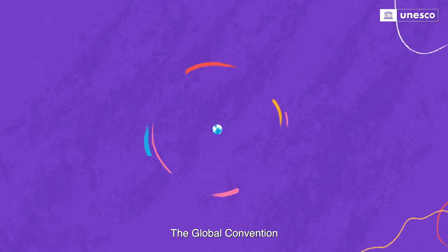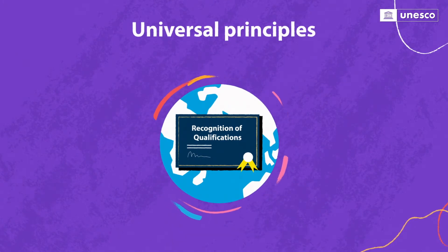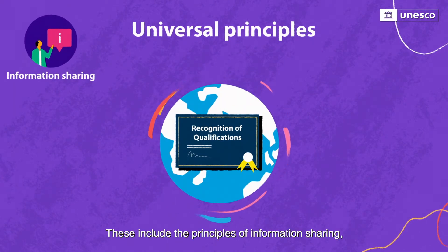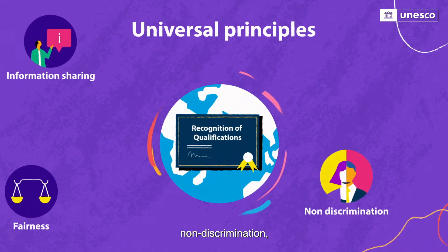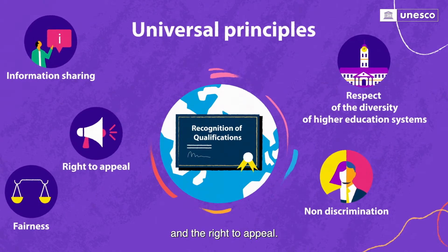The Global Convention establishes universal principles for the recognition of qualifications. These include the principles of information sharing, fairness, non-discrimination, respect for the diversity of higher education systems, and the right to appeal.